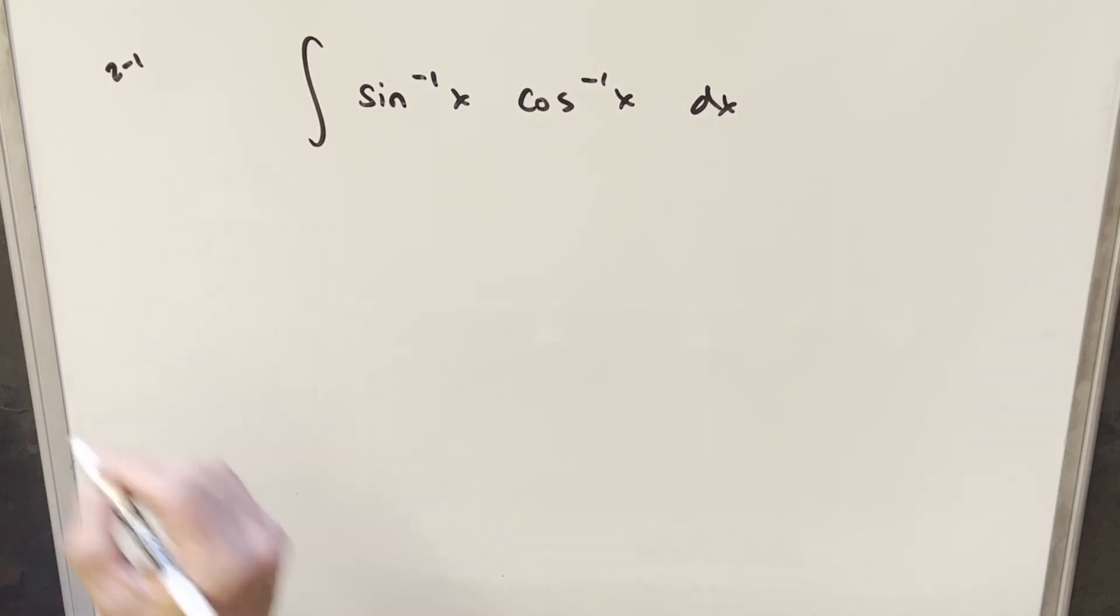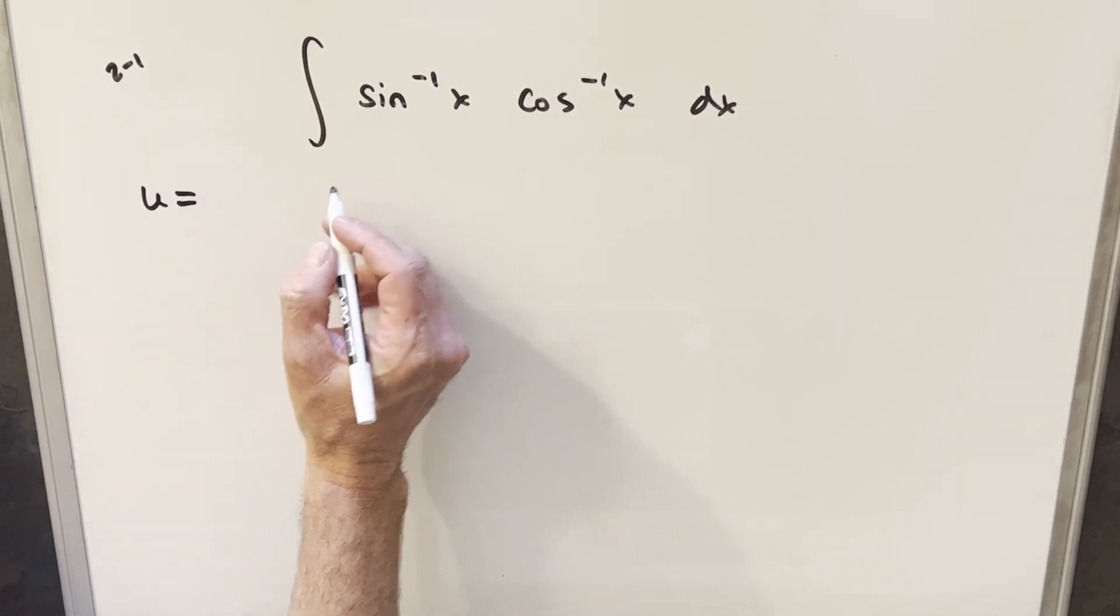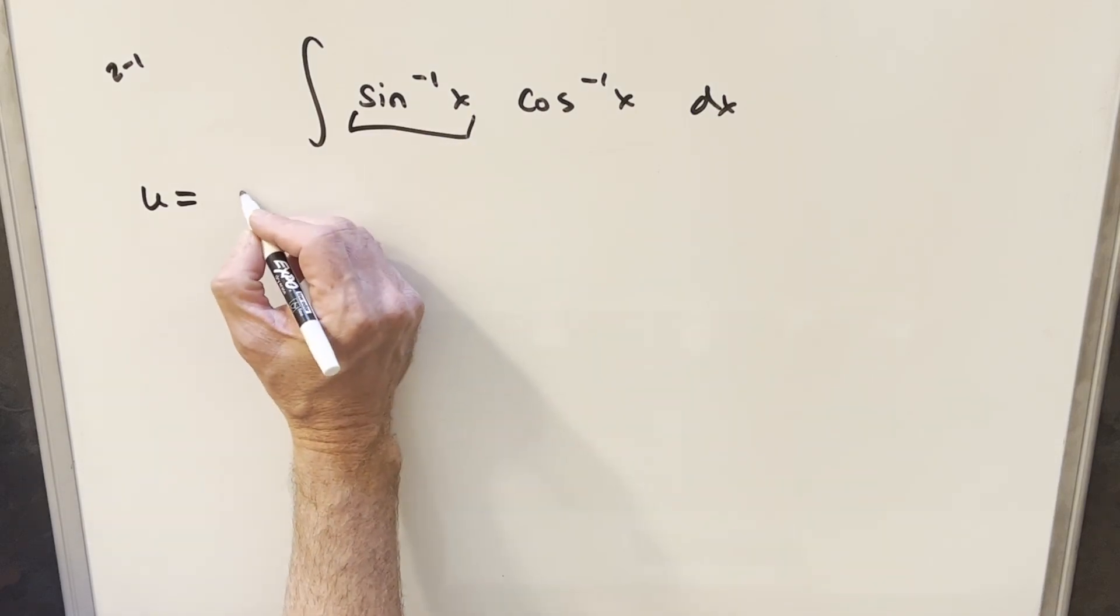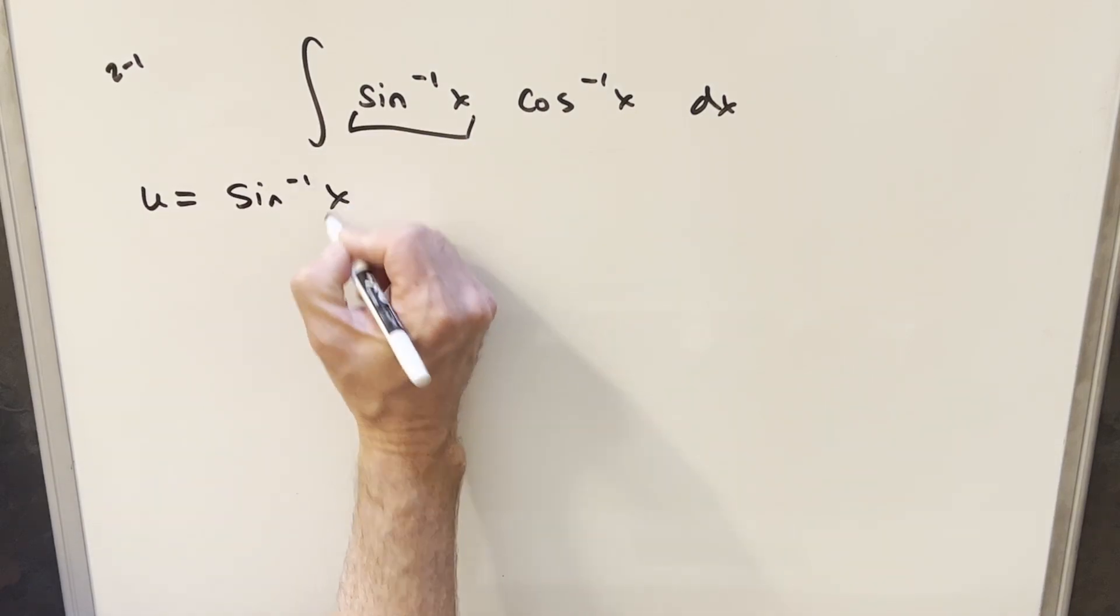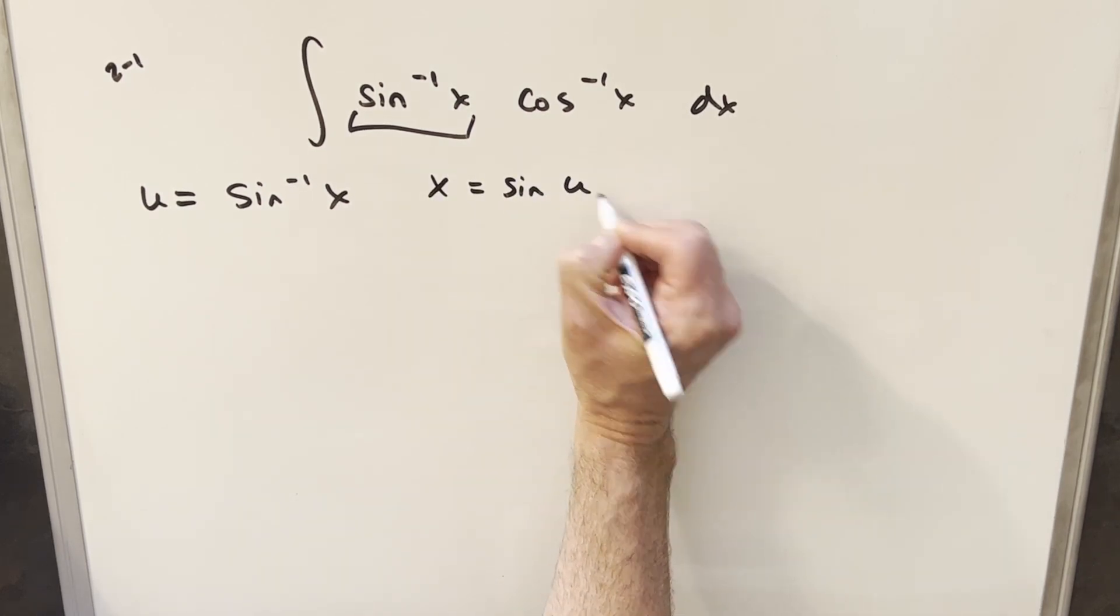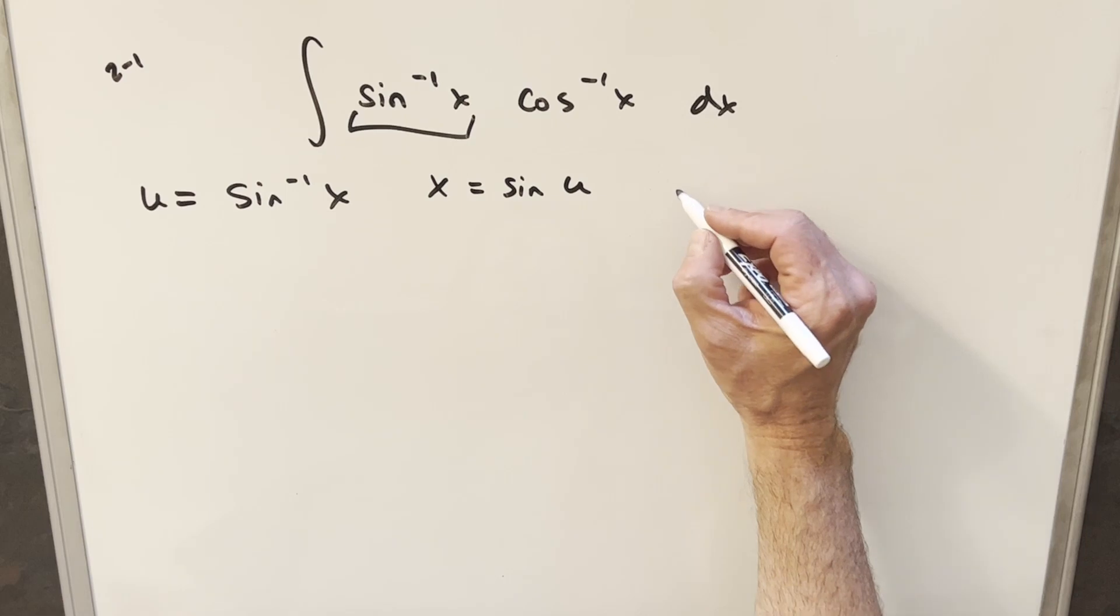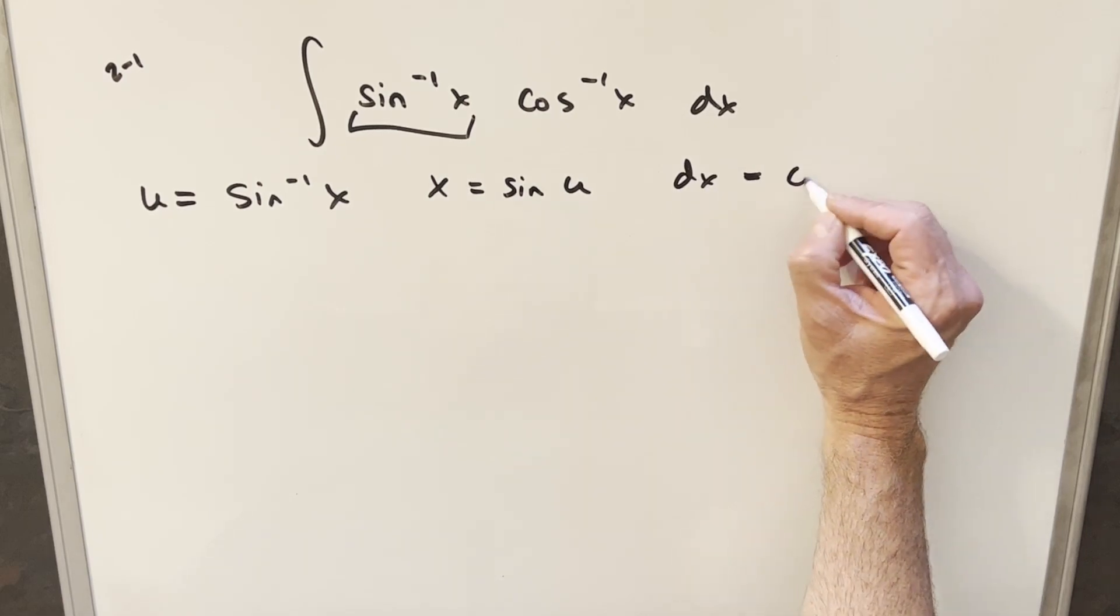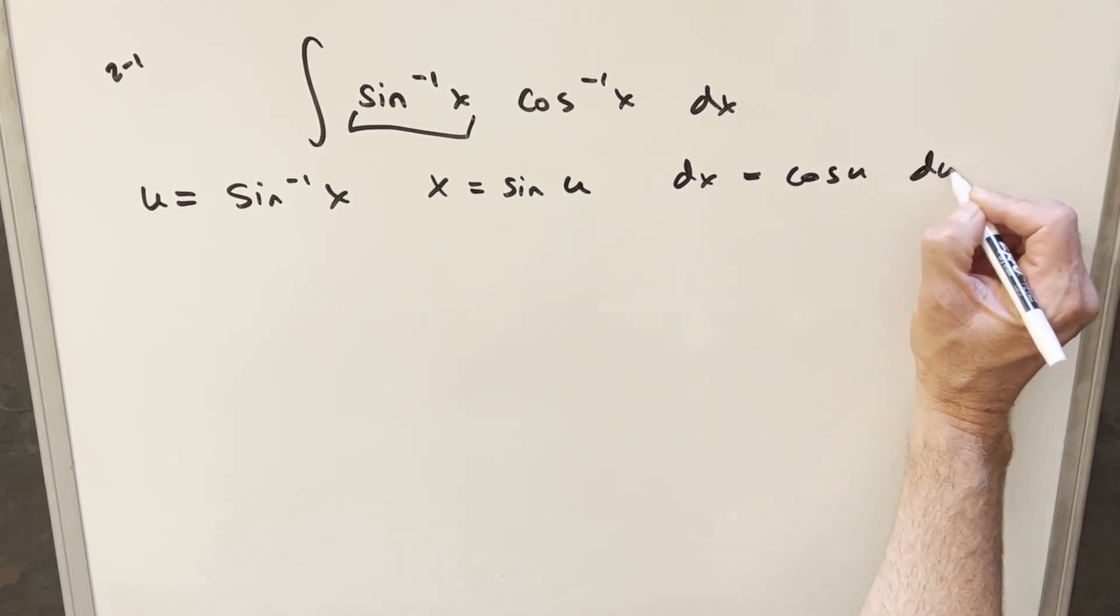To start, instead of integration by parts, we're going to try a u substitution. I'll make arcsine my u. So we'll set u = sin⁻¹x. From this, we can find that x is equal to sine of u. Then I'll take my derivative to get a dx value. So dx is going to be cosine of u du.